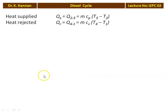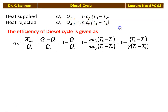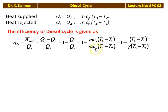Heat supplied at constant pressure: Q_s = mC_P(T3 − T2), and heat rejected at constant volume: Q_r = mC_V(T4 − T1). The efficiency of the Diesel Cycle is eta_D = net work done / heat supplied. From the first law of thermodynamics, net work done equals net heat supplied, so: eta_D = 1 − (heat rejected / heat supplied) = 1 − [C_V(T4 − T1)] / [C_P(T3 − T2)]. Taking C_V to the denominator gives C_P/C_V = gamma, so: eta_D = 1 − (T4 − T1) / [gamma(T3 − T2)].